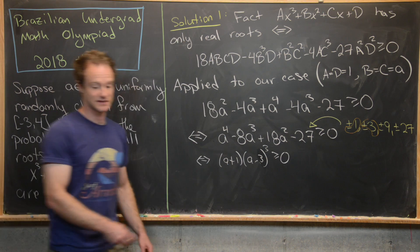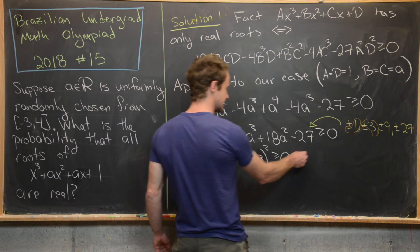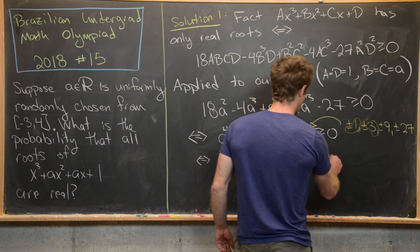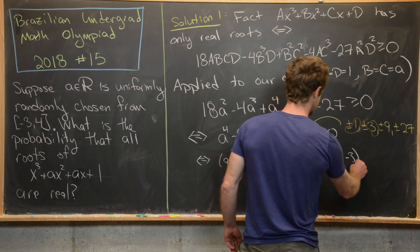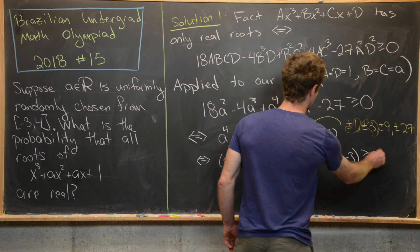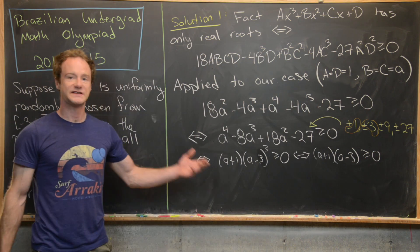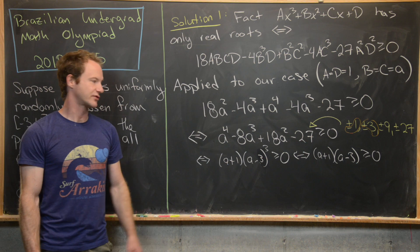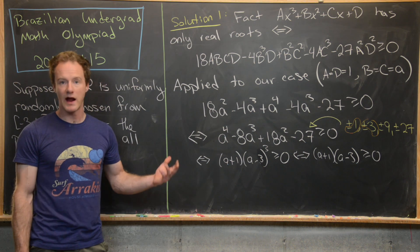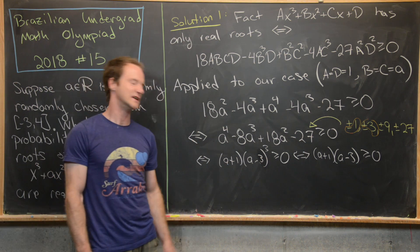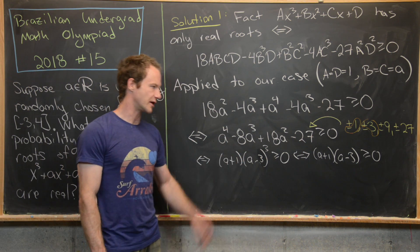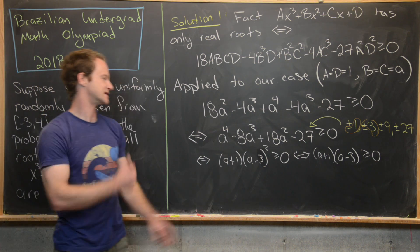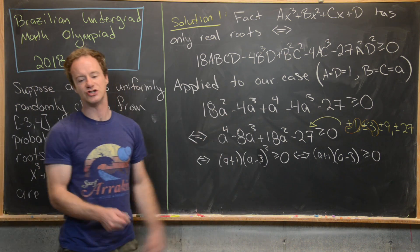Notice that (a + 1)(a − 3) cubed ≥ 0 if and only if (a + 1)(a − 3) ≥ 0, since we can divide by (a − 3) squared, which is always non-negative — and the edge case a = 3 is on the boundary anyway.